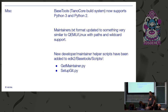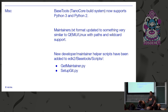We support Python 3 and Python 2 these days. We fixed the maintainer's text format — we used to have a very non-granular way of tracking who was maintaining which part of the code. We've now moved to something that looks a lot more like what QEMU and Linux have, and also developed some new scripts to help: a git-maintainer.py, and I also wrote a setup-git.py to make some common known-good settings for sending things to TianoCore work correctly.